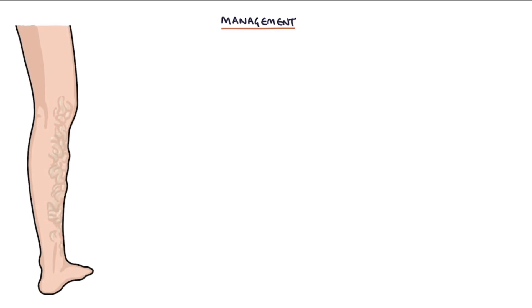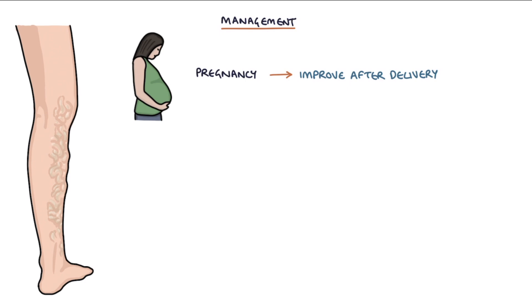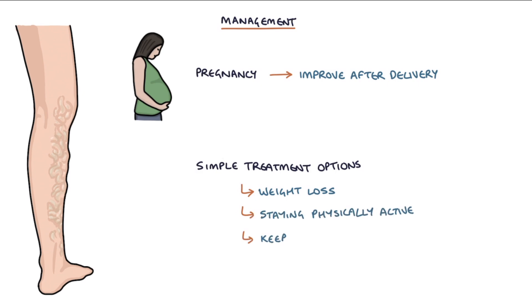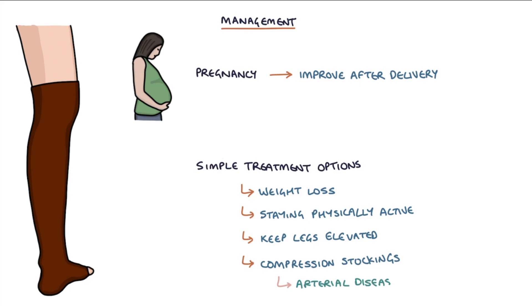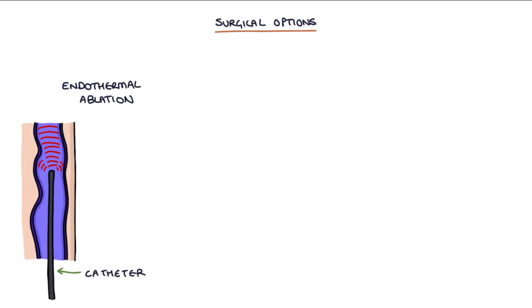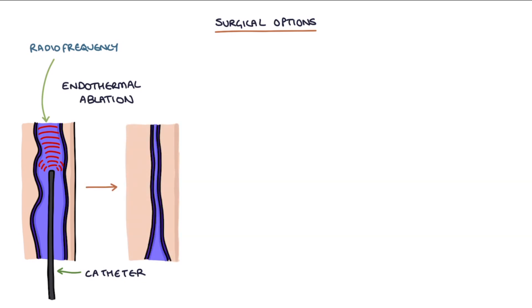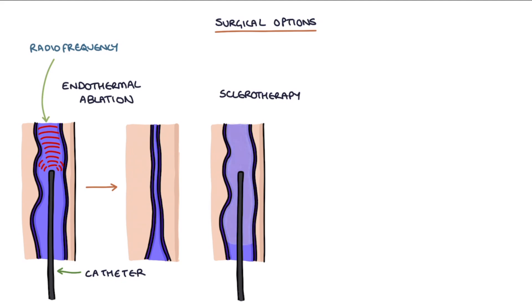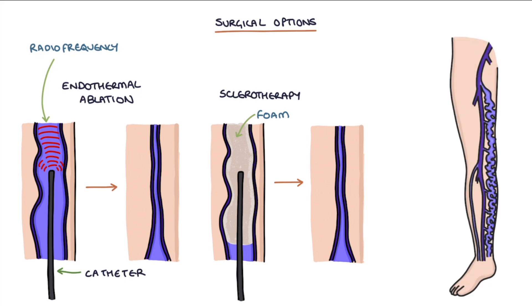Varicose veins in pregnancy often improve after delivery, so they are often managed conservatively with watchful waiting. Simple treatment options include weight loss if appropriate, staying physically active, keeping the legs elevated when possible to aid drainage, and use of compression stockings. However, arterial disease must be excluded before using compression stockings, using an ankle brachial pressure index. Surgical options include endothermal ablation, which involves inserting a catheter into the vein to apply radiofrequency ablation and destroy the vein; sclerotherapy, which involves injecting the vein with an irritant foam to cause closure; and stripping of the veins, where the veins are ligated and pulled out of the leg.